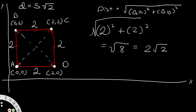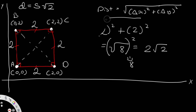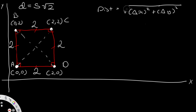To avoid dealing with irrational numbers, we can square the distance. The square root cancels out, so our new distance formula becomes just (Δx)² + (Δy)² — no square root needed. This is the squared Euclidean distance.